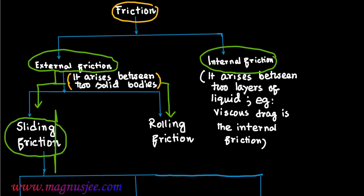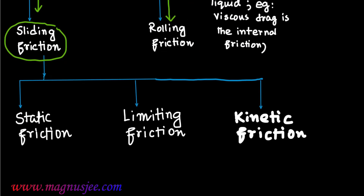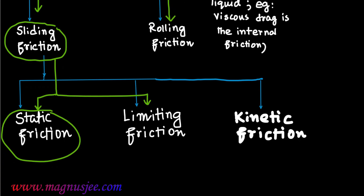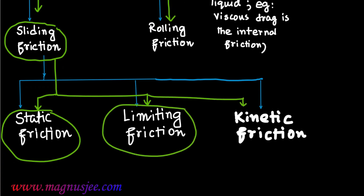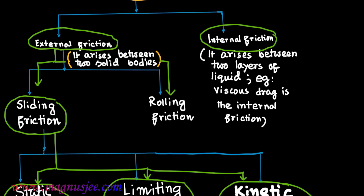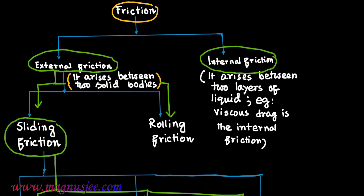There are three types of sliding friction. Number one is static friction, when a body is at rest on the surface of another body. Number two is limiting friction, when the body is at the verge of moving over the surface of another body. The last type of sliding friction is kinetic friction. So this is the classification of friction or frictional force.